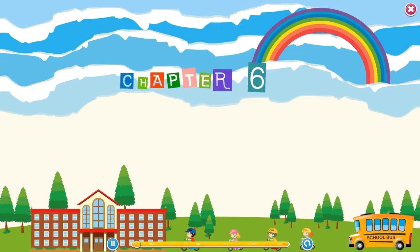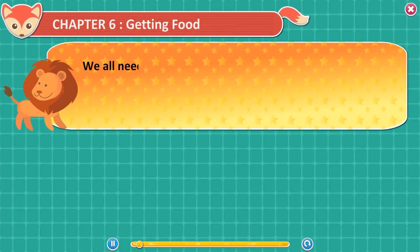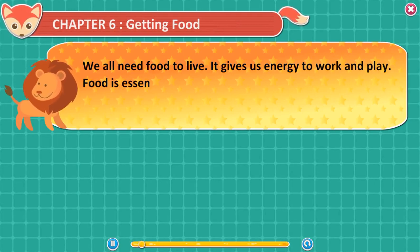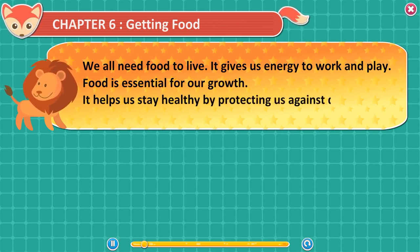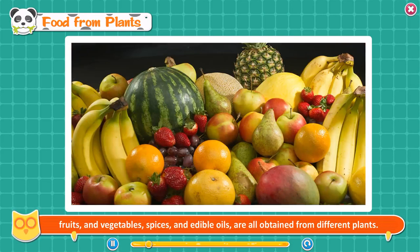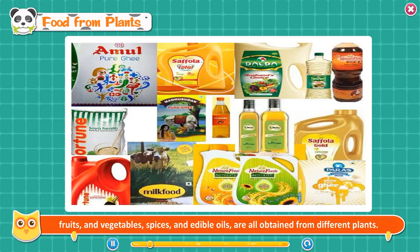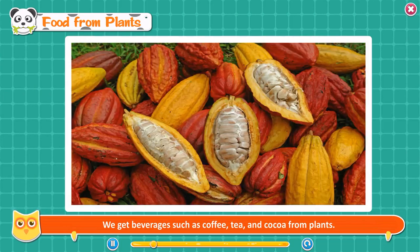Chapter 6: Getting Food. We all need food to live. It gives us energy to work and play. Food is essential for our growth. It helps us stay healthy by protecting us against diseases. Food from plants. Most of the food that we eat comes from plants. Cereals, pulses, fruits and vegetables, spices, and edible oils are all obtained from different plants. We also get beverages such as coffee, tea, and cocoa from plants. People have used herbs and spices for centuries to flavor and preserve food.